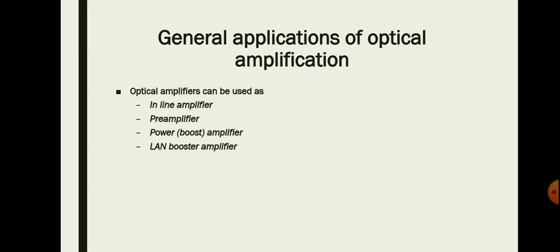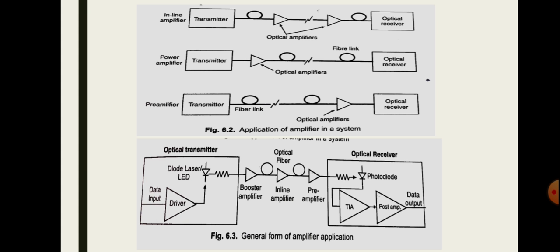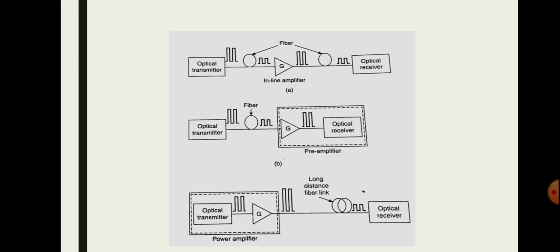The general applications of optical amplification include inline amplification, preamplification, and power amplification. Based on these, amplifiers are called inline amplifiers, preamplifiers, power amplifiers, and LAN booster amplifiers. If amplifiers are used along the optical fiber communication link, they are called inline amplifiers. An inline amplifier has a gain G placed along the fiber link.